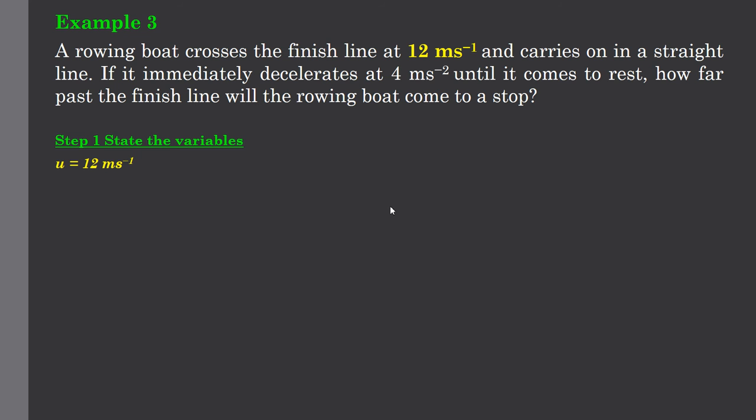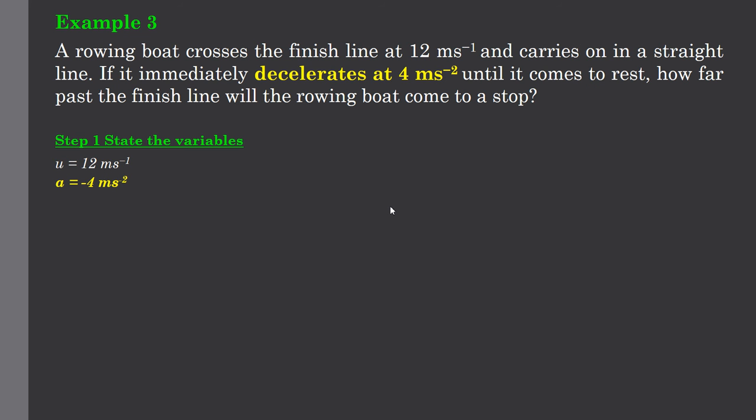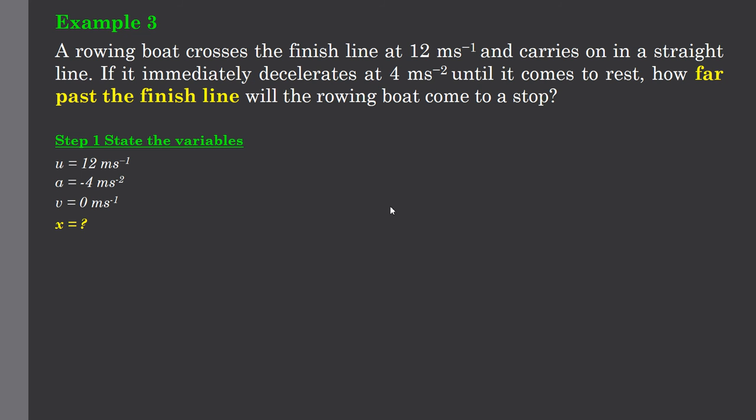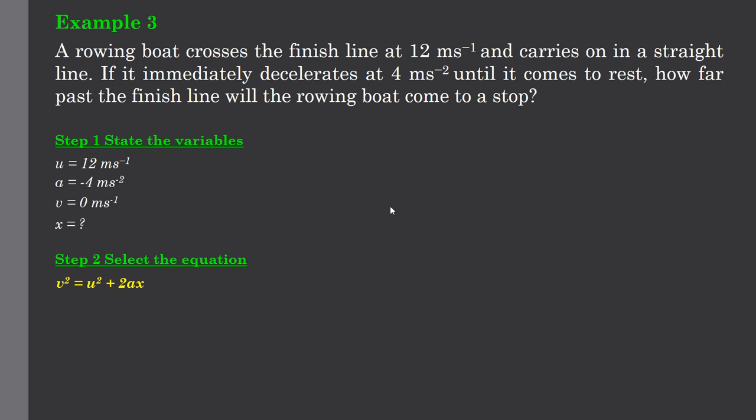So first of all our initial is 12 meters per second. Our acceleration this time decelerates, so it's a negative acceleration. So acceleration is negative 4 meters per second per second. Our final velocity is 0 because it comes to rest. And we want to know how far past the finish line will it end up? x equals question mark. The equation that has that is v squared equals u squared plus 2ax.